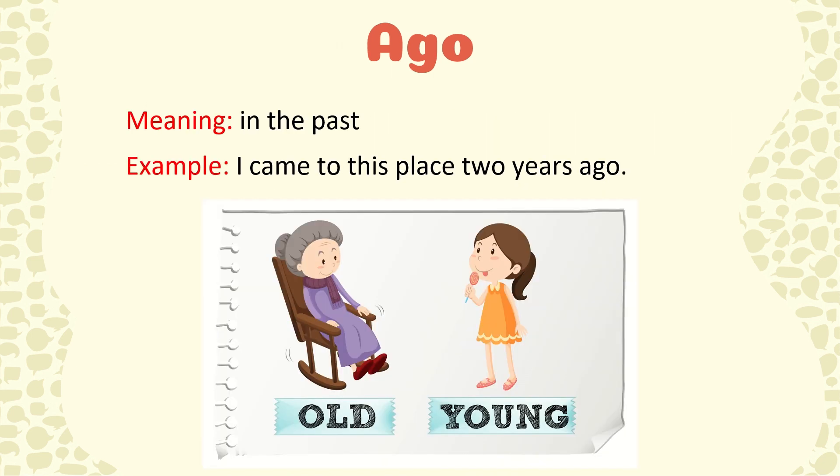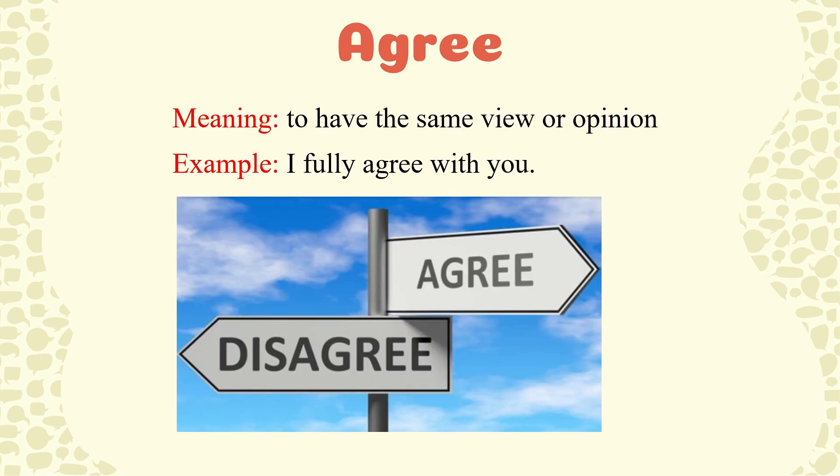Ago. Means in the past. For example, I came to this place two years ago. Agree. It means to have the same view or opinion. For example, I fully agree with you.